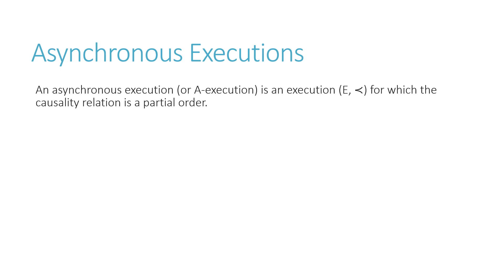Let's talk about asynchronous execution. Asynchronous execution is an execution where we are persisting some causality relation in a partial order. In asynchronous execution, there is no synchronization — there is no acknowledgement. When we are sending a message, we don't know whether the message has been received by the recipient. Even without knowing that, we can continue sending further messages. That is what happens in asynchronous communication.